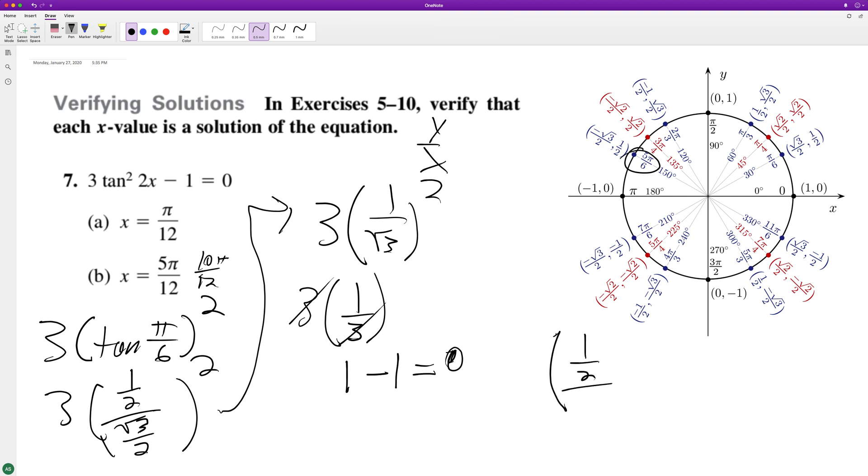It's going to be 1 half divided by negative root 3 over 2, which becomes 1 over negative root 3. But because you square it and then multiply it by 3, it just becomes a positive 1 third, and you get 1 out, and 1 minus 1 equals 0. Kind of messy there, but it works.